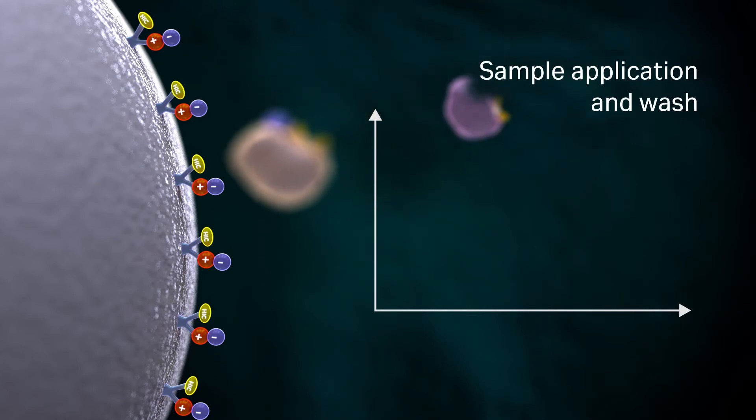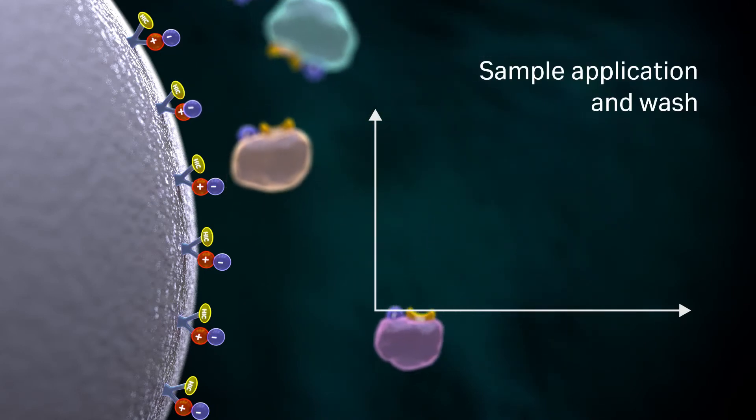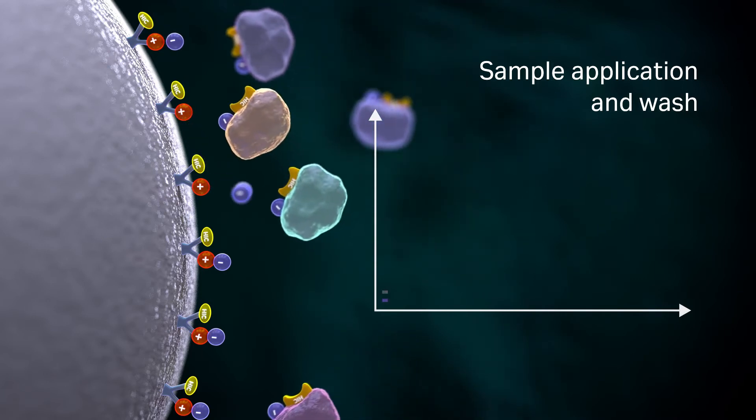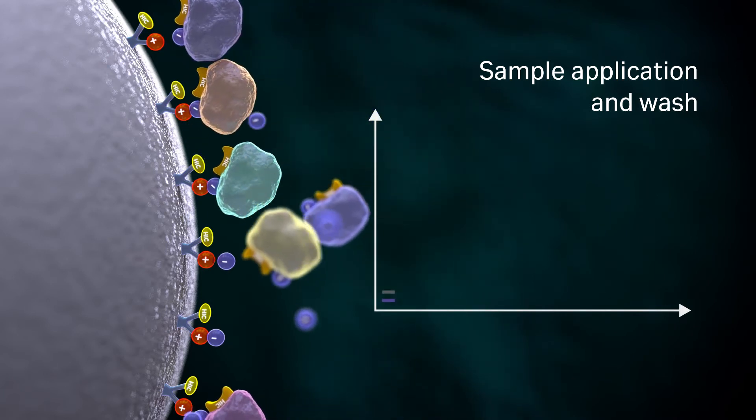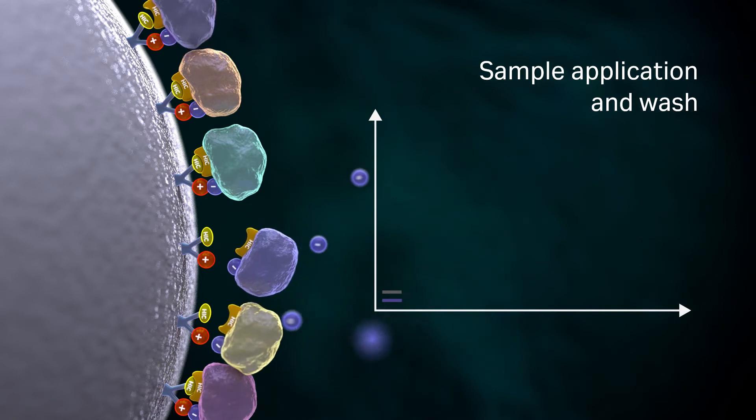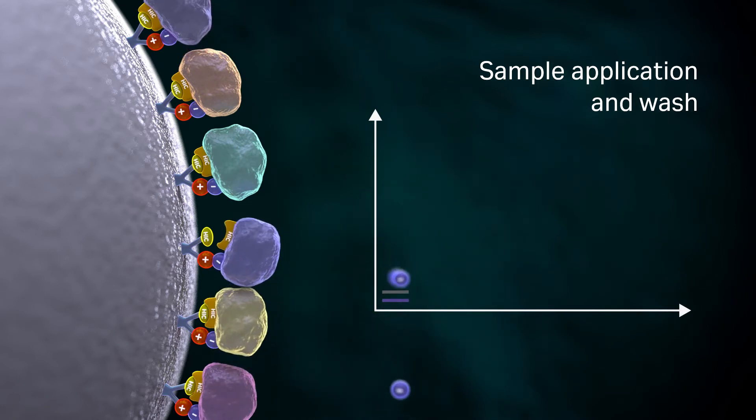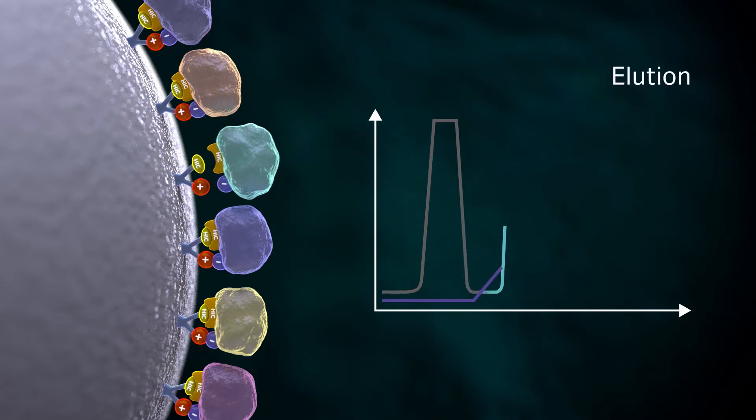The second step is sample application and wash. In this step, the target molecule binds to the resin via multimodal interactions, while unbound components are washed out. For the target molecules to bind, the sample buffer should have the same pH and ionic strength as the starting buffer.